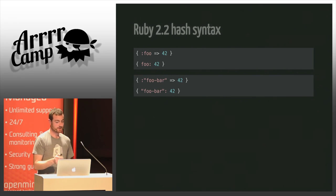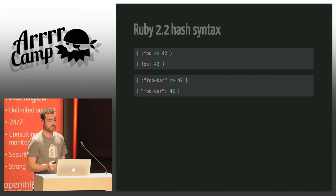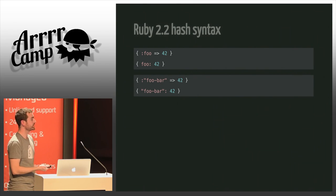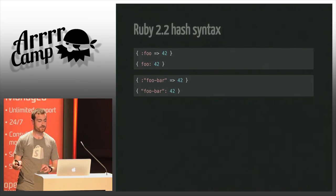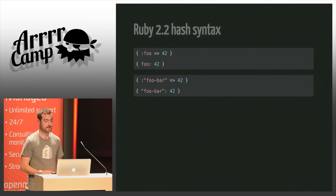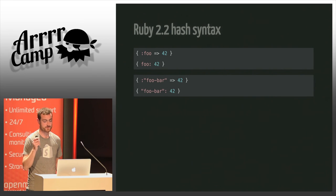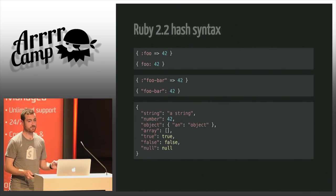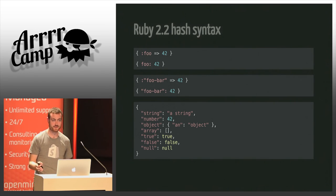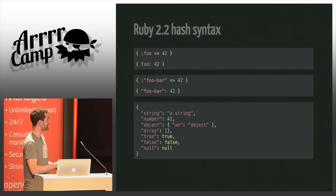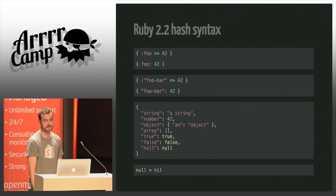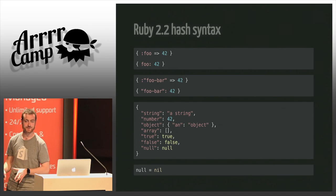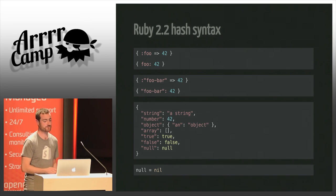Ruby 2.2 also brought a newer hash syntax. It used to be impossible to use keys that weren't identifiers with the new hash syntax — they added that. The logical conclusion is that you can now copy and paste JSON into IRB and it works, almost — you just have to define `null` as `nil`. I don't think you should do that in committed code, but for IRB it's a really useful feature.